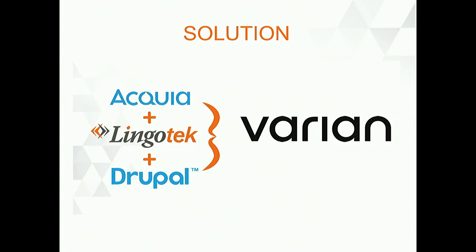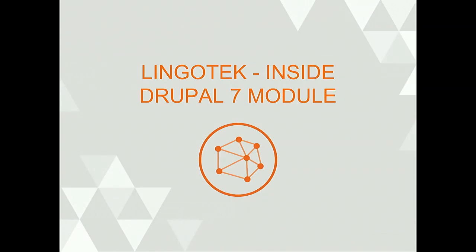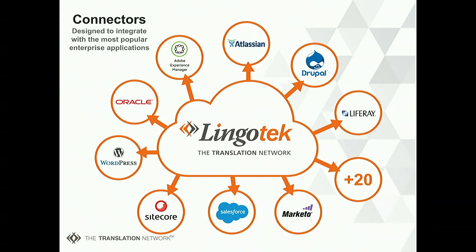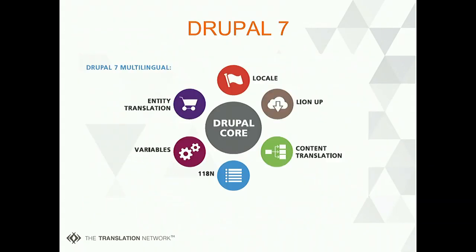Acquia is a great partner of ours. The solution with us and Drupal for Varian was: Acquia does the hosting of the site, we do all the translation, and Drupal is the glue between those two. Let's talk about the Lingotek Inside Drupal 7 module. We have a multilingual API-first approach, which allows different content repositories — website code repositories, e-commerce software UIs, all these different things — to connect together and reuse all of those assets. This is an idea of the different connectors we connect with, Drupal being one of the primary ones.